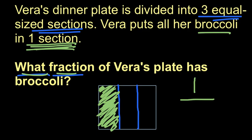And then our denominator will be out of the total number of equal sections, and we know there are three equal-sized sections. So one-third, or one of the three sections, has broccoli.